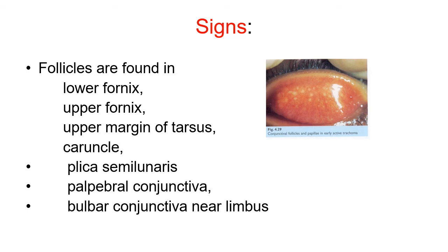Follicles are found in the lower fornix — in this picture you can see sago grain-like structures appearing white in color. The size is 0.5 to 1 millimeter. Follicles are found in the lower fornix, upper fornix, upper margin of tarsus, and sometimes at the caruncle or plica semilunaris; maximally they are seen in the palpebral conjunctiva near the limbus.